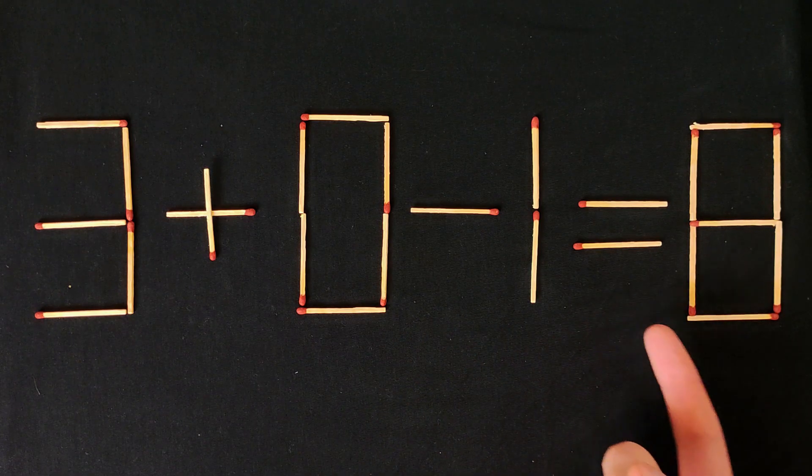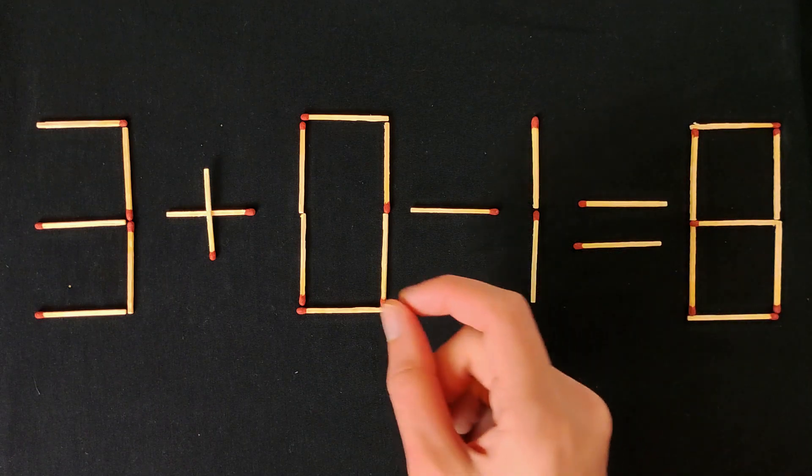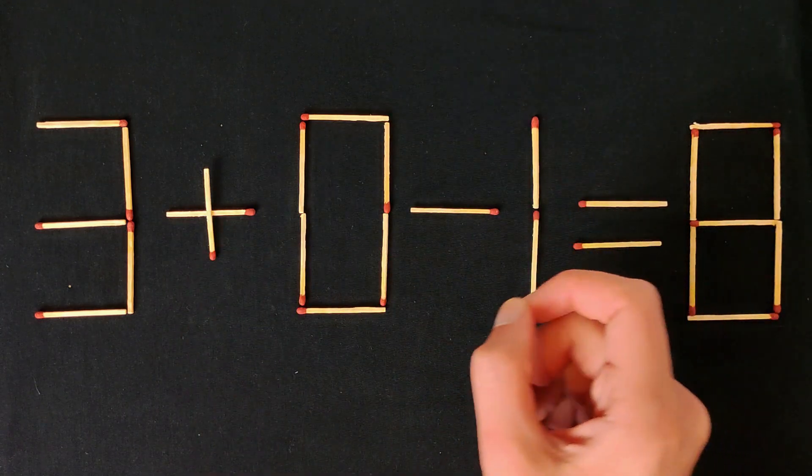3 plus 0 minus 1 equals 8. That's a wrong equation. We need to move only one match so that this equation is correct.